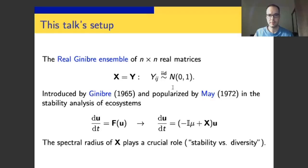It was introduced by Ginibre 55 years ago and soon afterwards popularized by Robert May in 1972. May in particular was interested in ecosystems and he used real Ginibre matrices in his model.